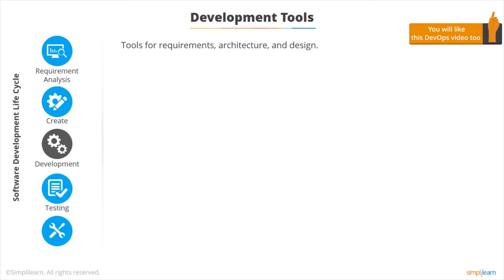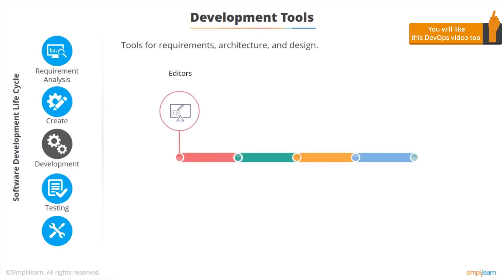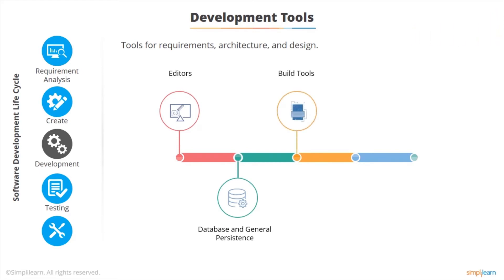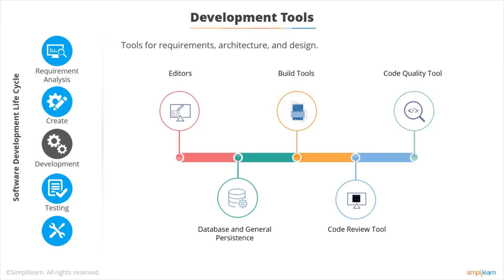The most complex stage of any software development is the code development stage, and there are many tools needed here. There's a variety of different editors, different types of databases, and different tools for building the software. We need tools for code review, and there are also very important code quality tools which can assess the quality of the code and identify common problems very quickly.